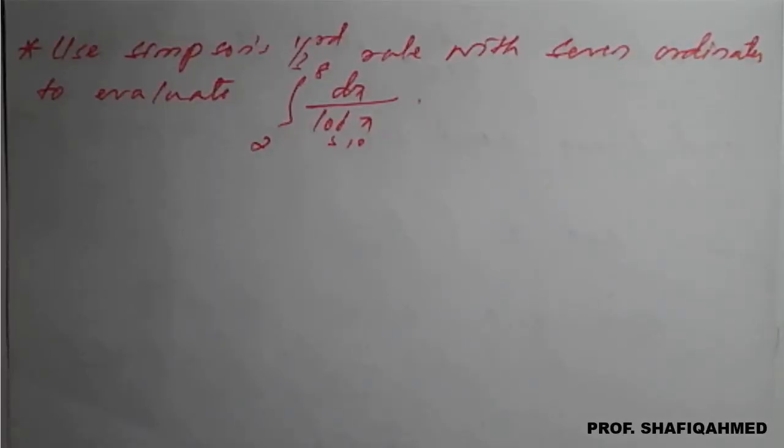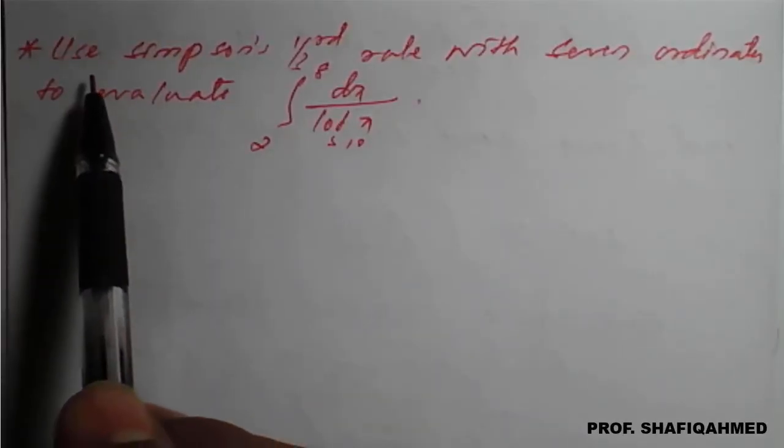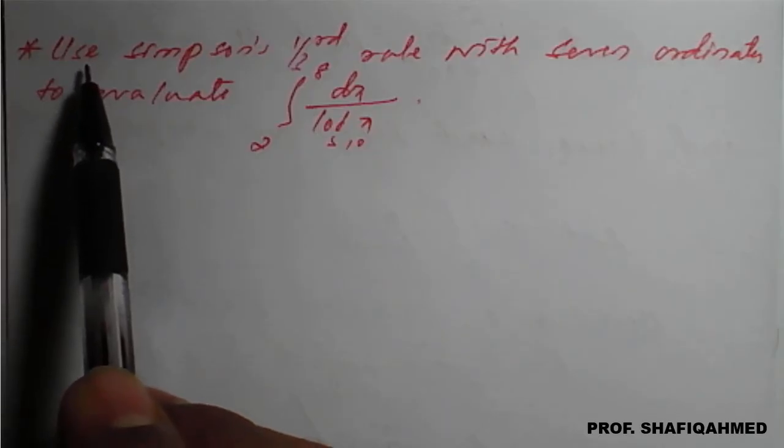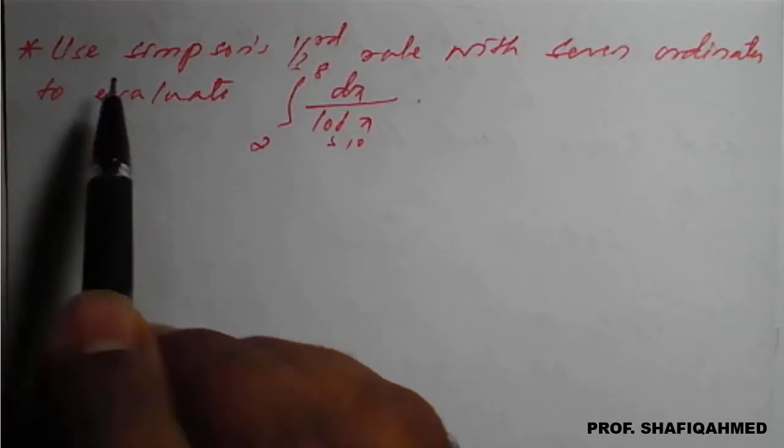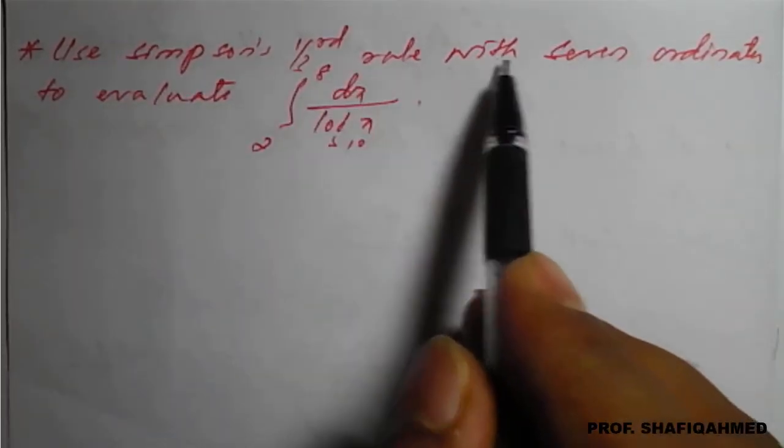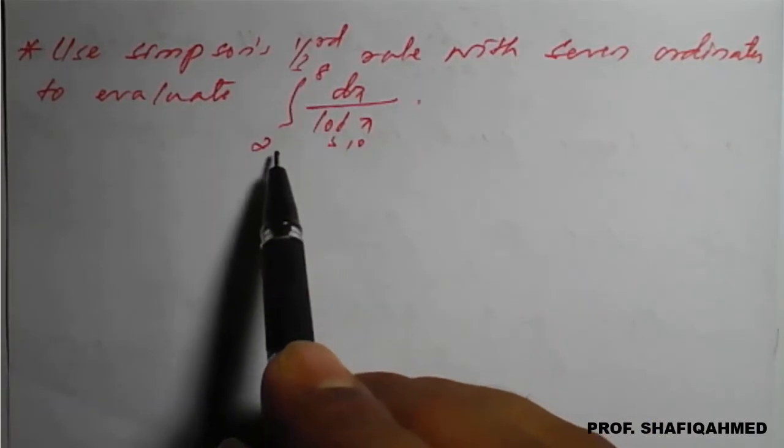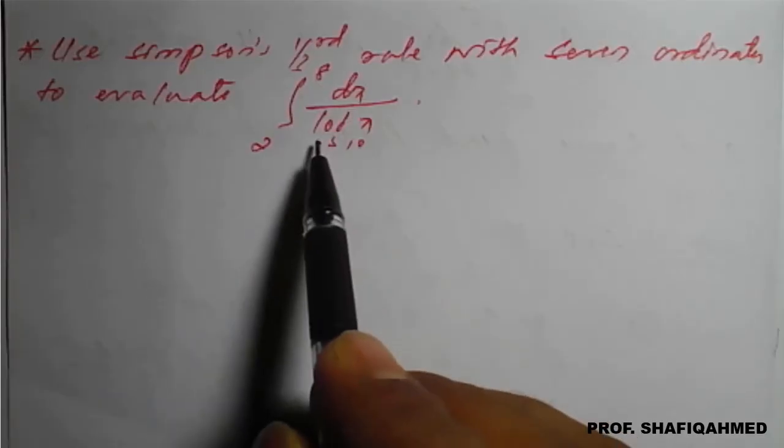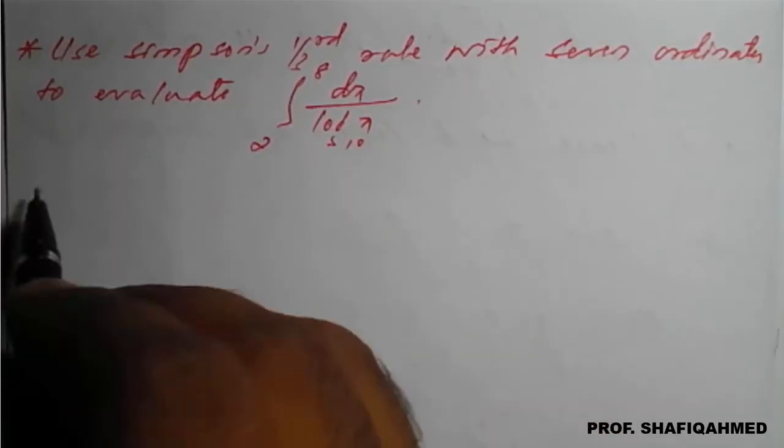Hello everyone, in this lecture we will see a problem based on Simpson one third rule under numerical integration. The problem is: use Simpson one third rule with 7 ordinates to evaluate the integral from 2 to 8 of dx divided by log of x to the base 10.